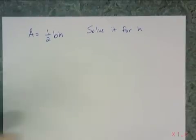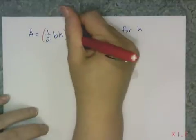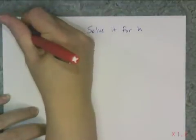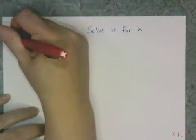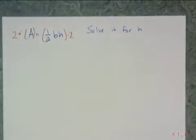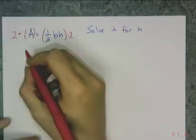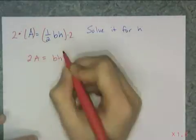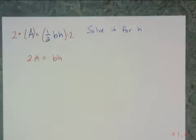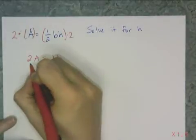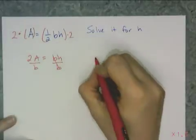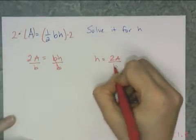I'm going to get rid of the one-half first by multiplying by 2. You want to avoid getting a fraction in a fraction, so don't divide by one-half — just multiply by the reciprocal. So you get 2A equals bh, and then to get h by itself, divide both sides by b. That gives the new formula: height equals 2A over b.